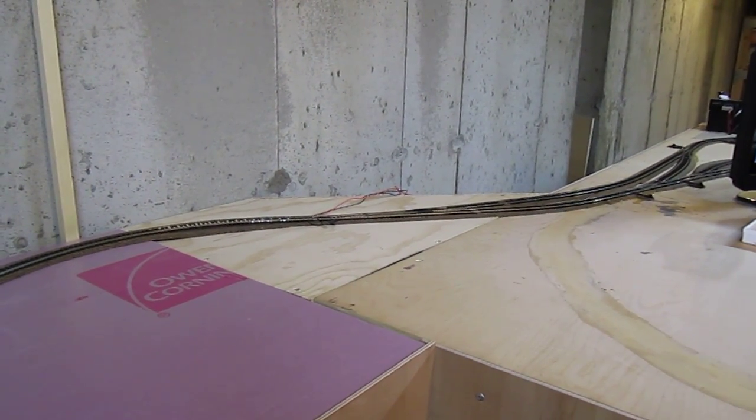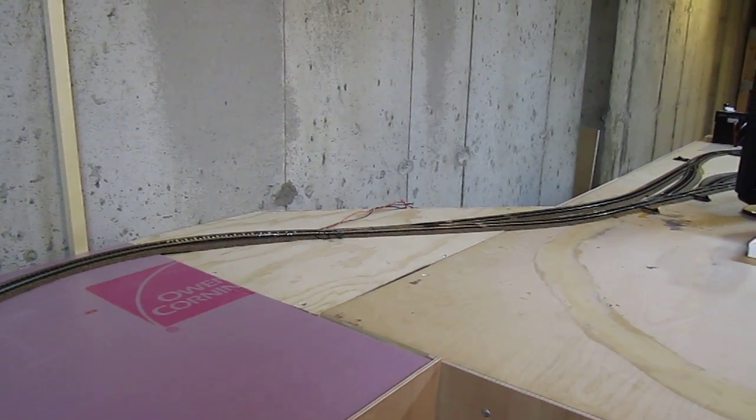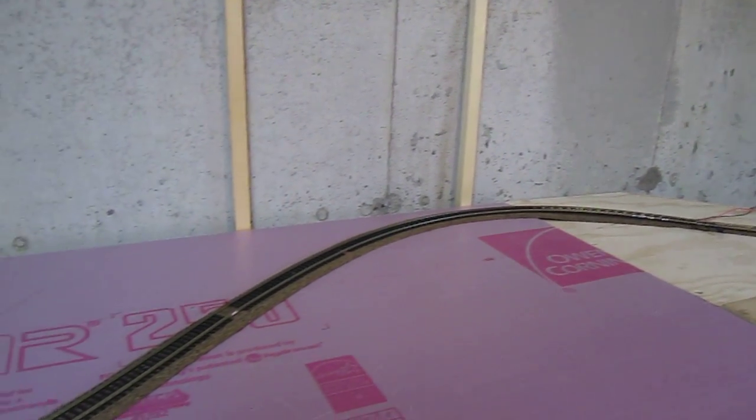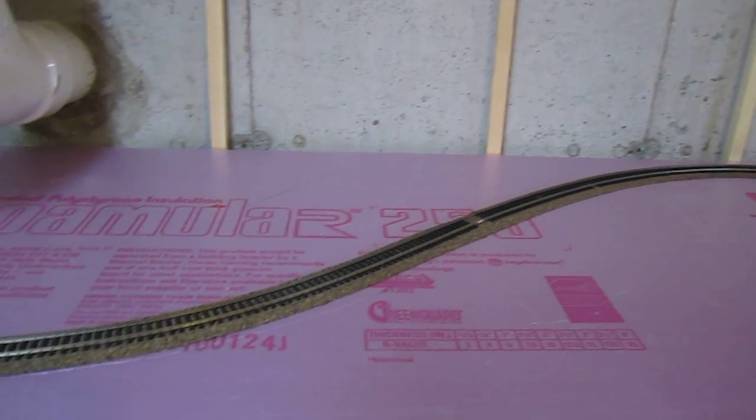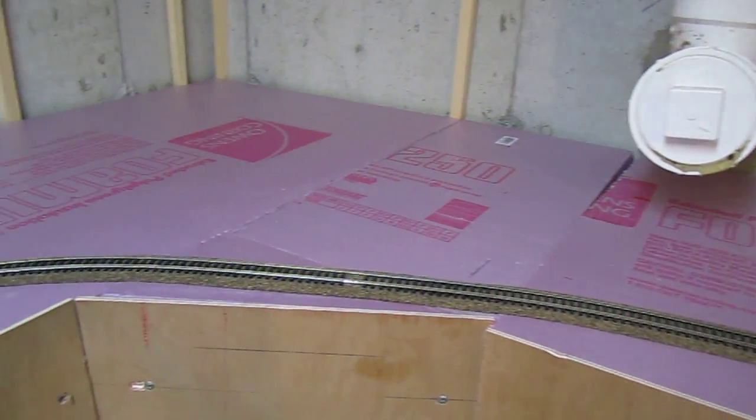Alrighty, here's a little video of the progress on my layout. As you can see, there's some very temporary wiring there, and I've laid roadbed and temporary code 100 track. The final track will be all code 83.